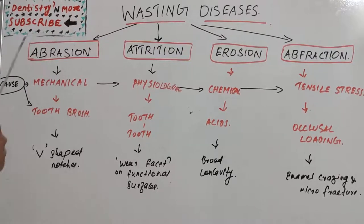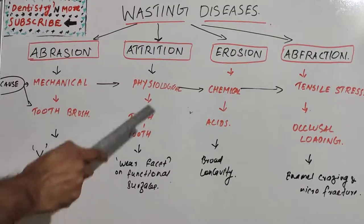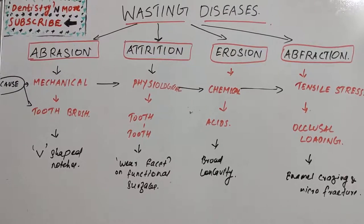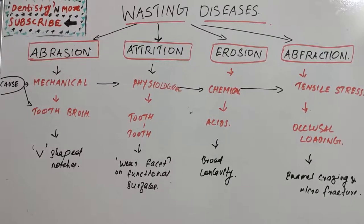Attrition is a physiological cause resulting from tooth-to-tooth contact — a two-body wear that produces well-defined wear facets on the functional surfaces of teeth. The functional surfaces of teeth in one jaw match the corresponding lesion on the teeth in the other jaw. If tooth loss is present on the upper teeth, the opposite teeth will also have similar tooth loss — that is attrition.